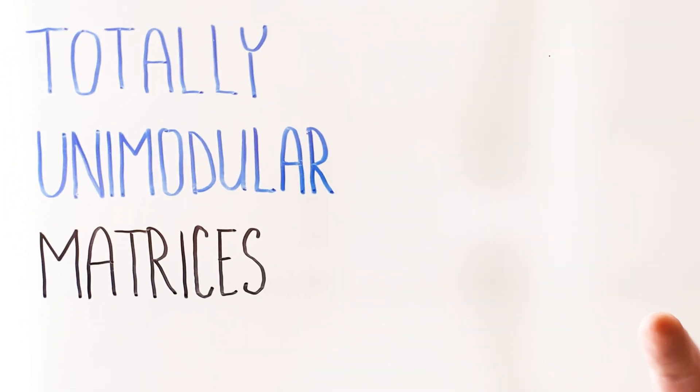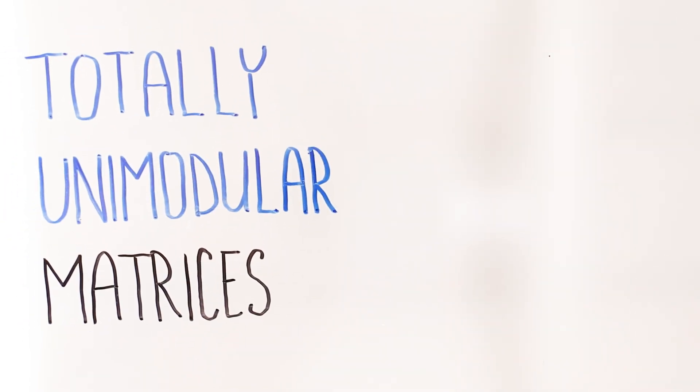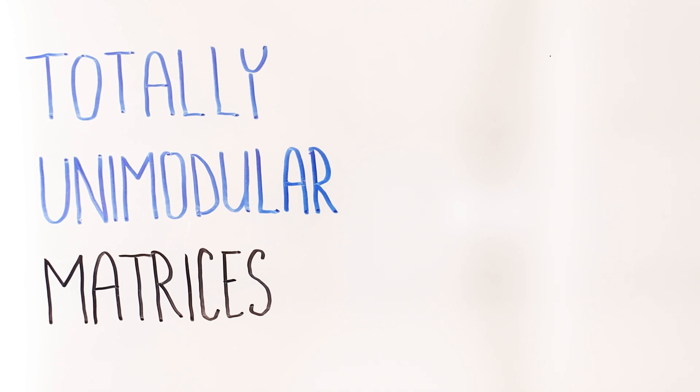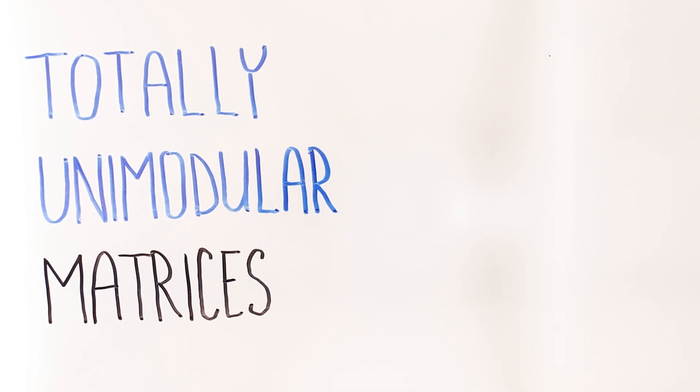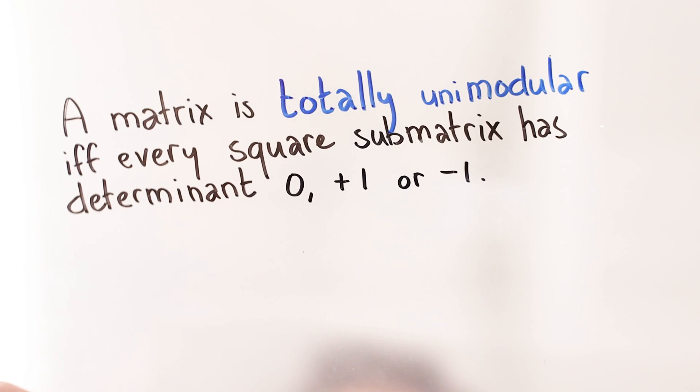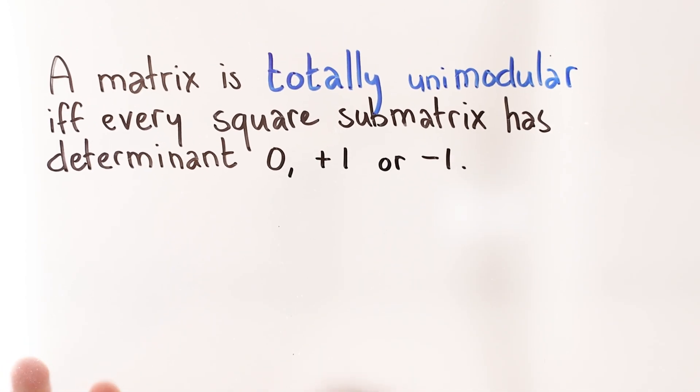There is a property of matrices called unimodularity, and a variant I want to talk about today called total unimodularity. The definition is a bit opaque. A matrix is totally unimodular if every square submatrix has determinant 0, plus 1, or minus 1.